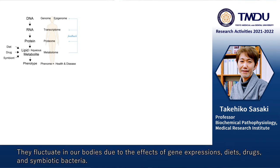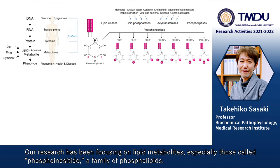They fluctuate in our bodies due to the effects of gene expressions, diets, drugs, and symbiotic bacteria. Our research has been focusing on lipid metabolites, especially those called phosphoinositide, a family of phospholipids.